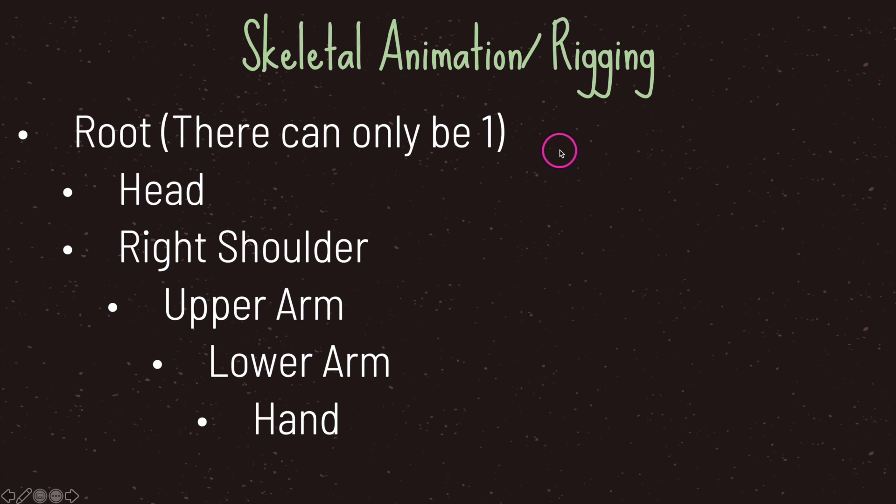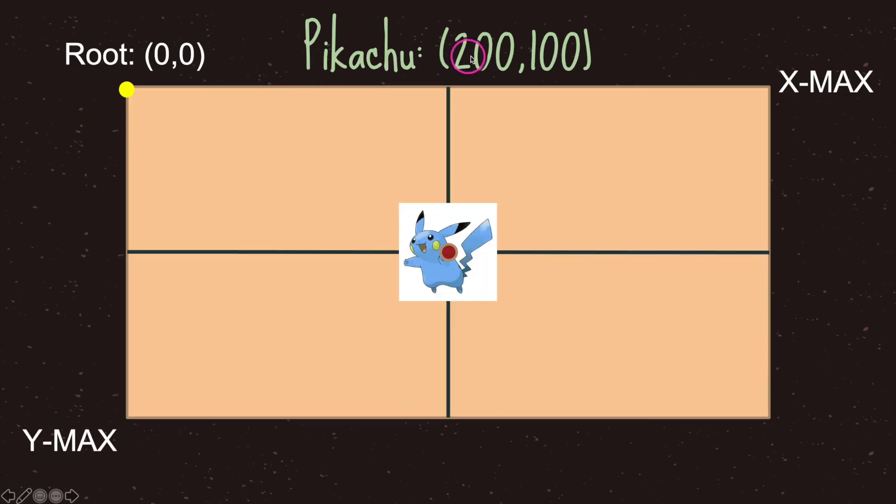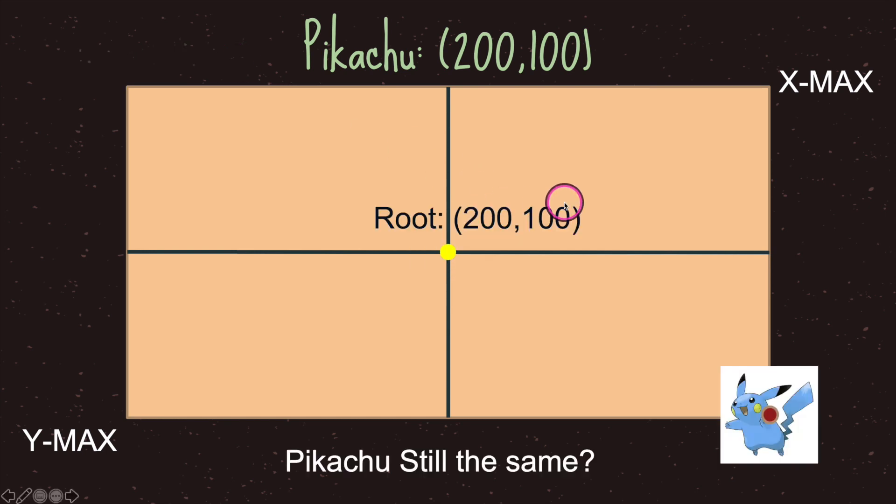So let's go ahead and take a look at that. So again we have our Pikachu positioned at X axis 200 Y axis 100 and our root node is positioned at zero zero in the game world. Now let's go ahead and move the root position and see how it affects our Pikachu. Now we moved our root position to the same position that our Pikachu was in which was 200 100 and notice our Pikachu is now at the bottom right corner of our screen.